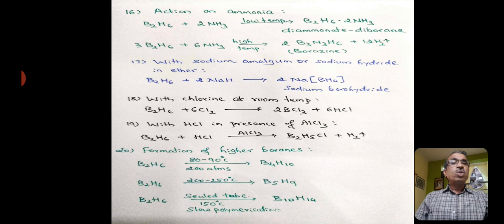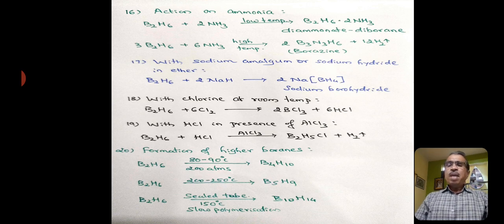With sodium amalgam or sodium hydride in ether, diborane forms sodium borohydride, formula NaBH4. Diborane also reacts with chlorine at room temperature to form boron trichloride. With HCl, it forms chloroborane in presence of aluminum chloride.